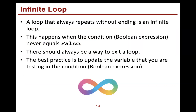We have to make sure there's a way to exit the loop. Best practice is to update the variable you're testing in the condition. Even though we did update it, we did it the wrong way — instead of decreasing the variable, we increased it. So sometimes even updating the variable can be wrong. This is a logic error in our code that we have to go back and figure out.